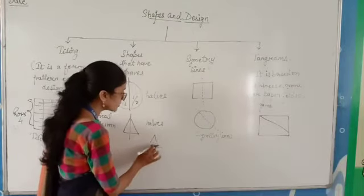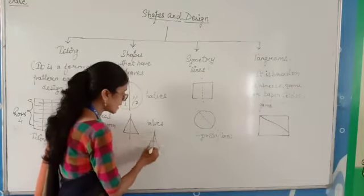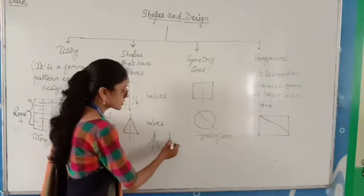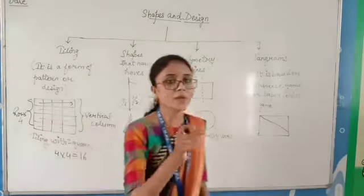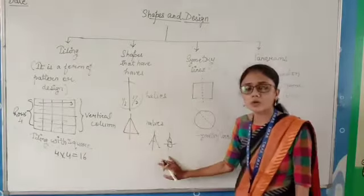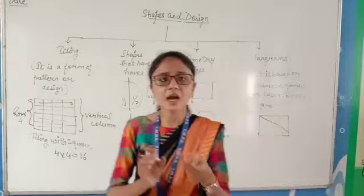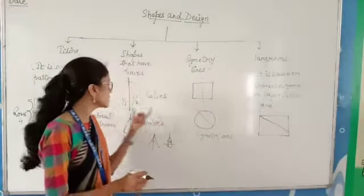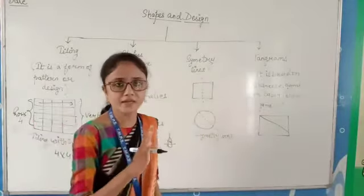Suppose A is written here — half it. B is written here — half it. You can do it any way: vertical or horizontal. That is, you can half it vertically or horizontally, dividing it between the two equal parts.